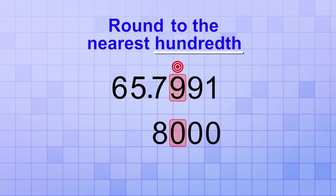The rest of the digits in the original number will be kept the same in the rounded version. So our rounded version will be 65.80.